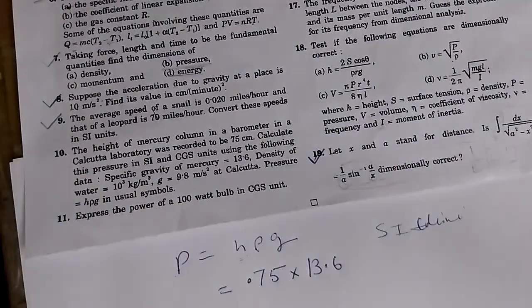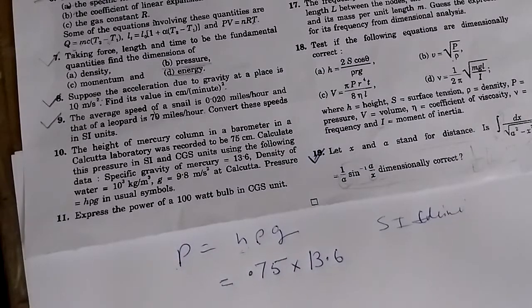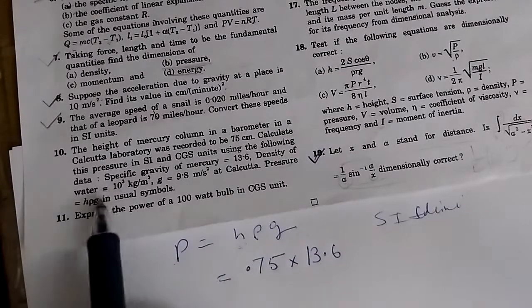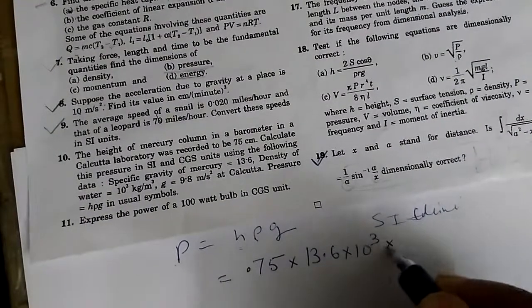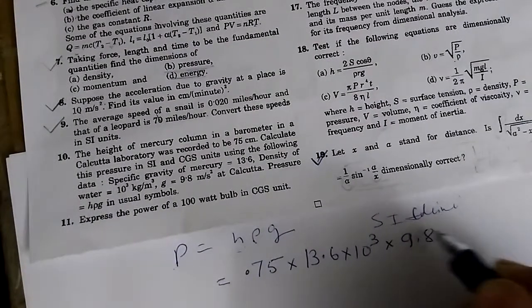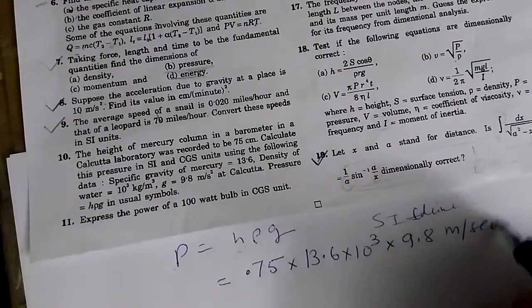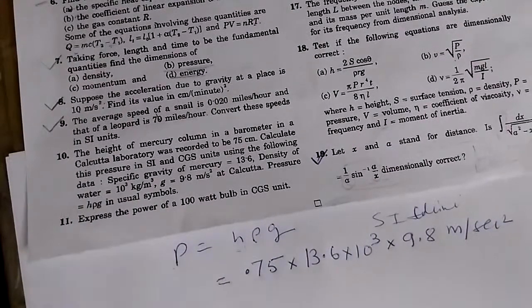It is specific gravity. Specific gravity is the gravity with respect to the water, and water is 10 to the power 3, so we multiply this one by 10 to the power 3, and G will write as 9.8 meter per second square.